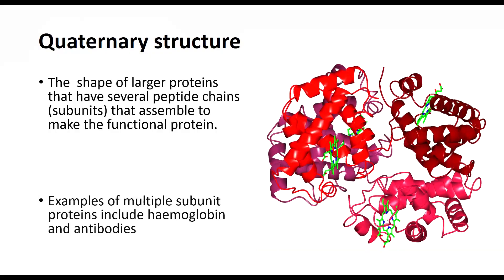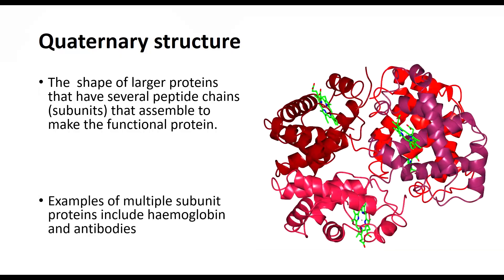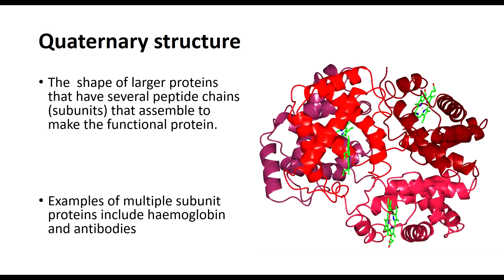Other proteins that use multiple peptide chains include antibodies, our first line of defense against invading organisms, which can have anywhere from four to twenty separate peptide chains or subunits making up one functional protein unit.